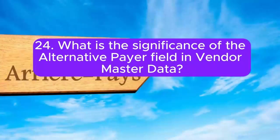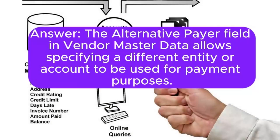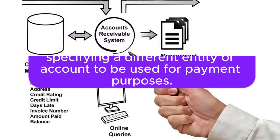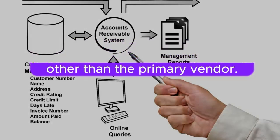24. What is the significance of the alternative payer field in Vendor Master Data? Answer: The alternative payer field in Vendor Master Data allows specifying a different entity or account to be used for payment purposes. It is useful in situations where payments may be made by a party other than the primary vendor.